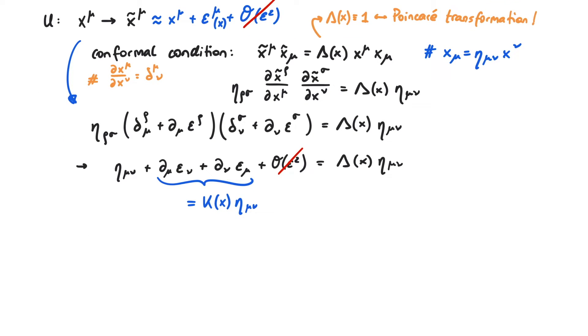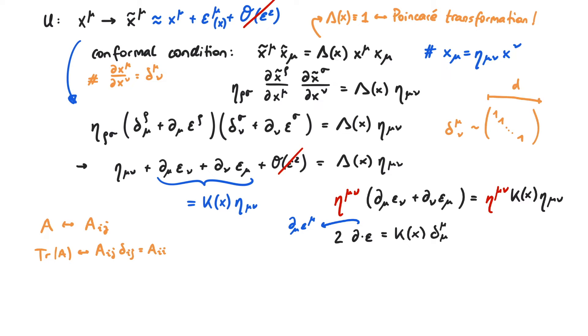Let us multiply the whole expression with eta mu nu. This is sometimes called tracing the equation, because by contracting the indices with the metric, we don't have three indices anymore, and this is just like taking the trace of an ordinary matrix. The left-hand side gives us two times the divergence of epsilon, and the right-hand side yields k of x times the trace of the Kronecker delta. If we don't specify the number of dimensions, this just yields d.